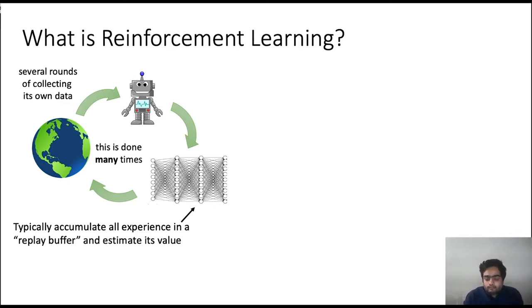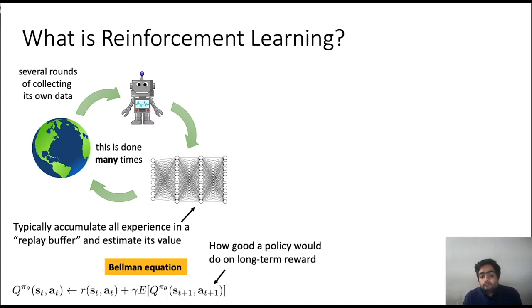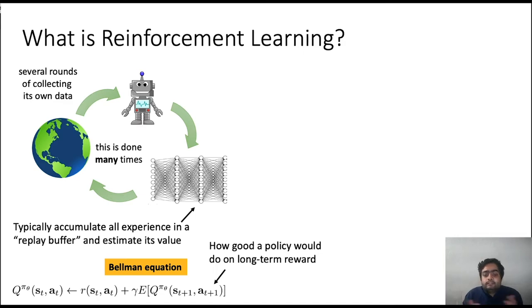Typical RL algorithms operate in the following way. They first estimate something known as a Q-function — an estimate of how good the policy is doing on the long-term reward — and then improve the policy against this estimate. Under Markov assumptions, which are very typical in reinforcement learning, these Q-functions satisfy a recursive relation, also known as the Bellman equation.